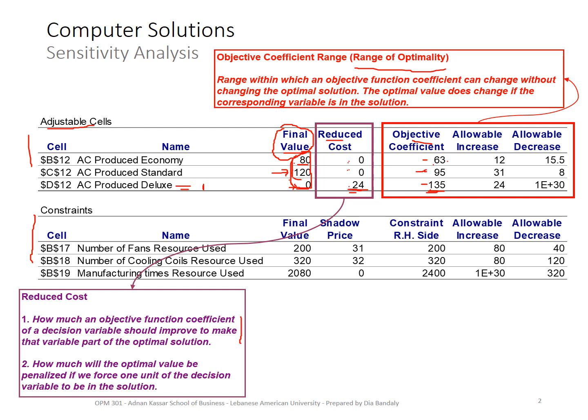So I can change 95. Let's say the profit contribution of standard became 120. So I have added 25, which is within that allowable increase. So I don't need to rerun the model again. I know that for sure that the same optimal solution will still result. But of course, the optimal value will change. When I change that to 120, then the optimal value, because this remained the same, my optimal value then will have 80 times 63, plus 120 times the new objective coefficient, which was 120 in my example. Now you notice something like that in Excel, or Excel uses this notation to just describe a very large number.